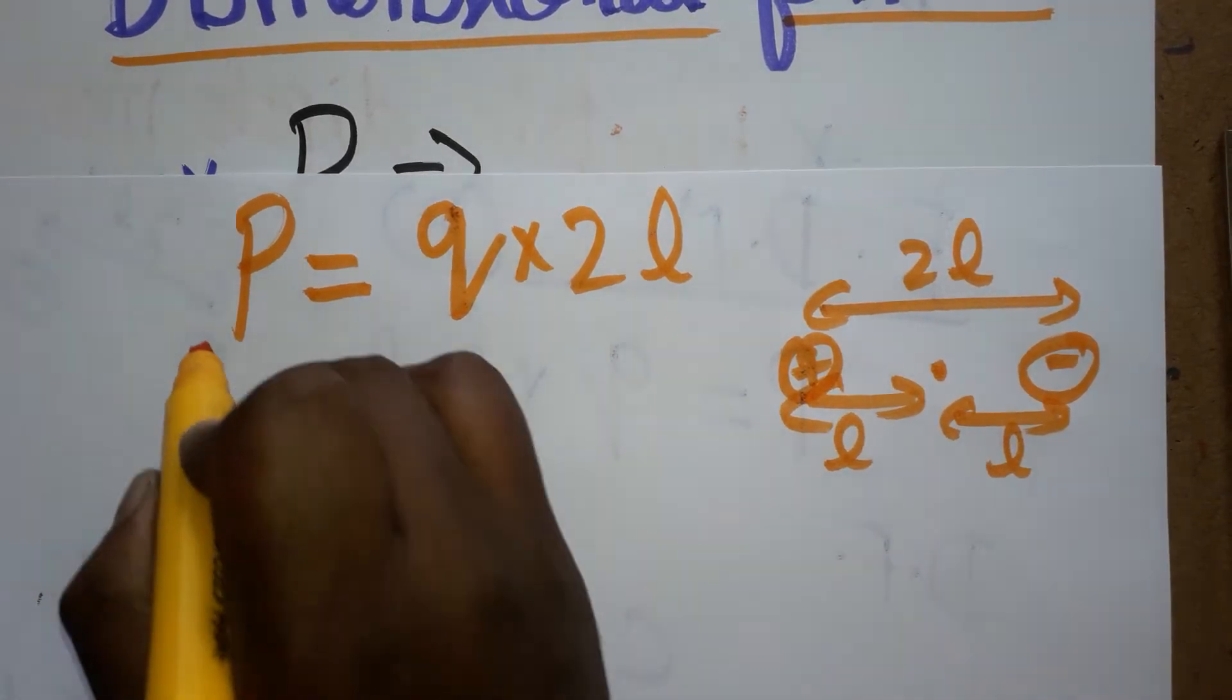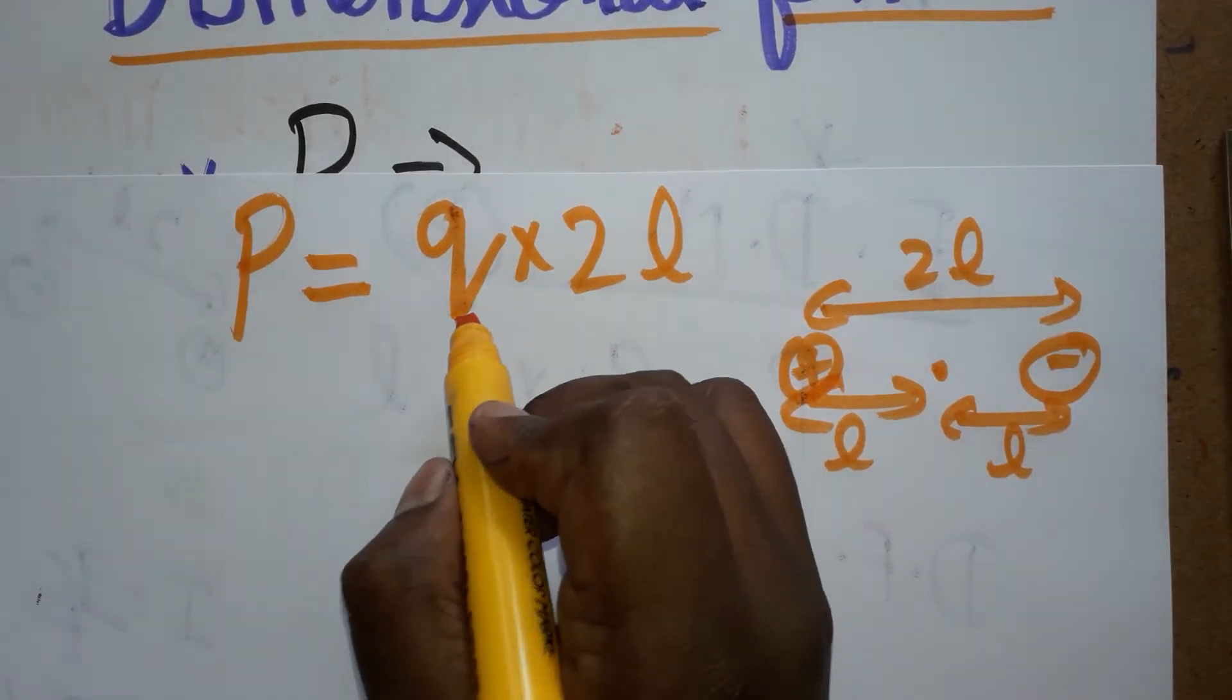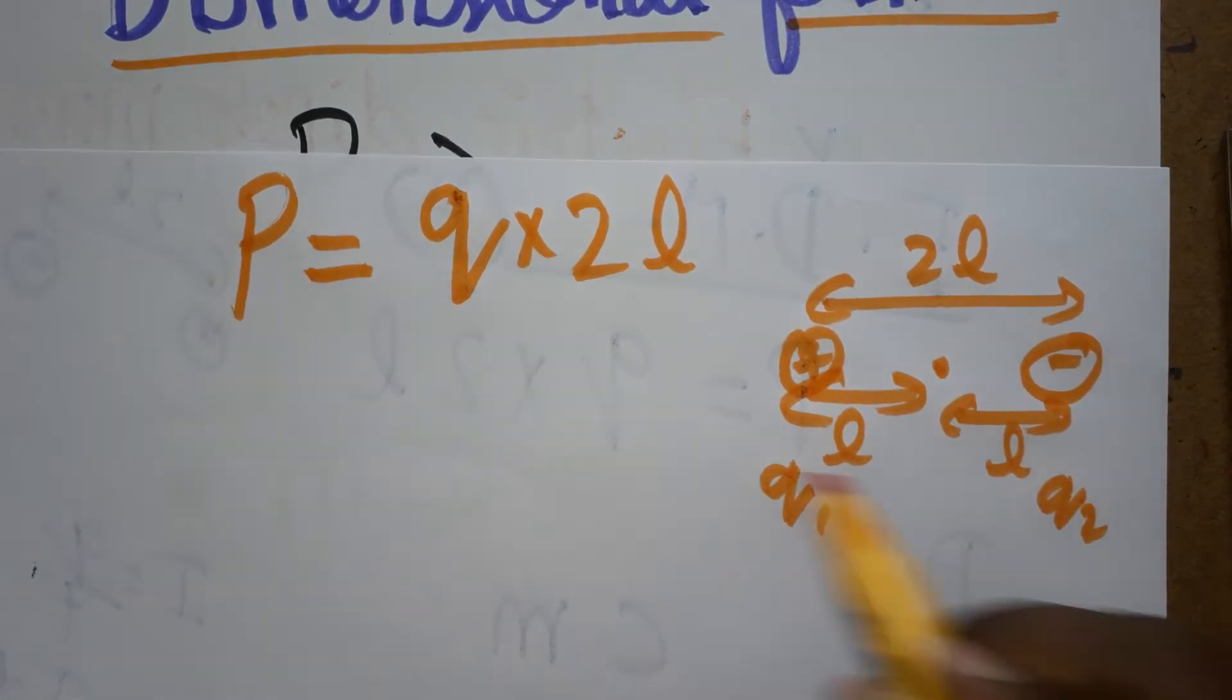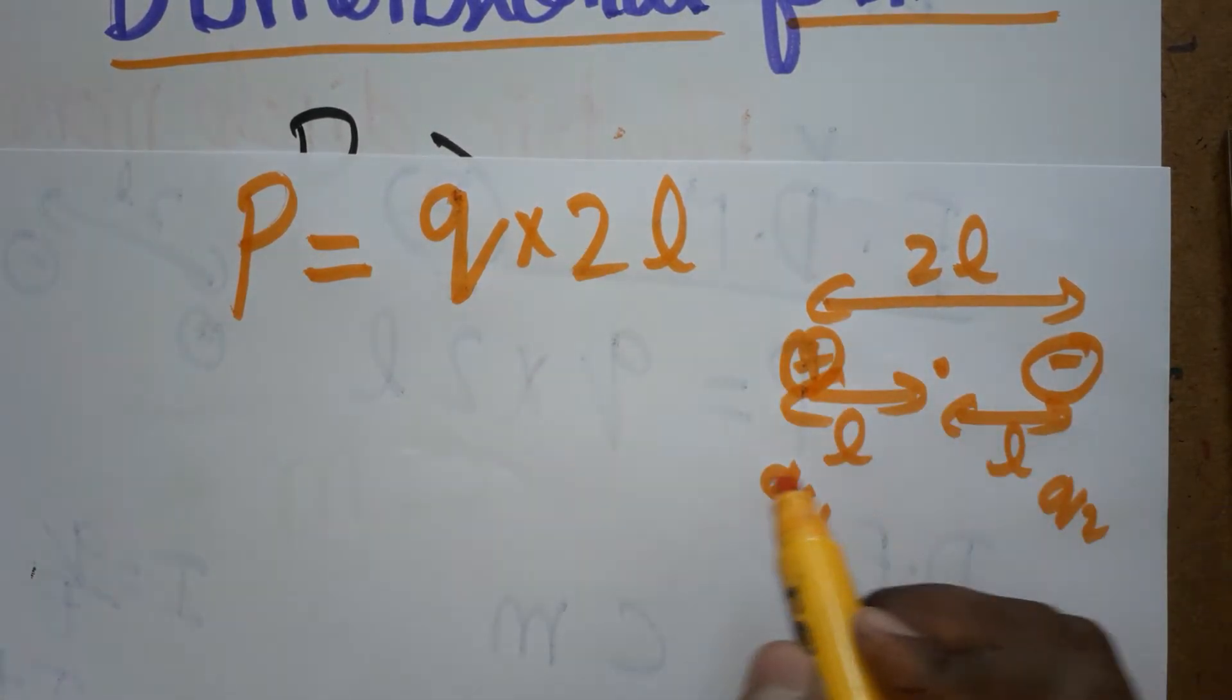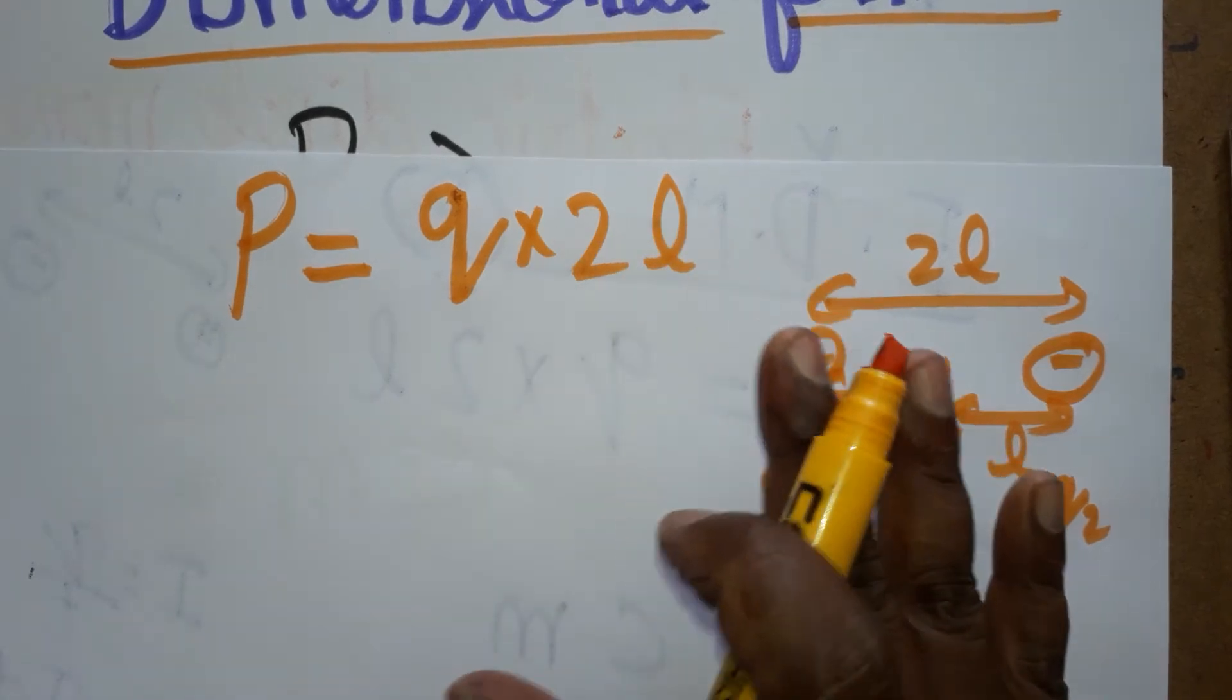Now, define electric dipole. Electric dipole is a product of any one of the charges, whether it is Q1 or Q2, and the distance between the two charges. This is called electric dipole moment.